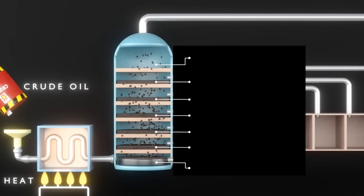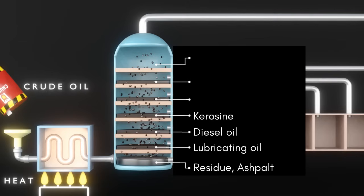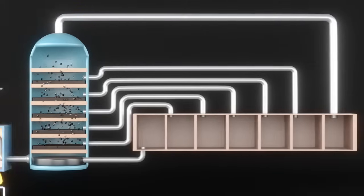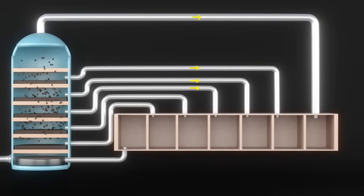By the refinery process, we get residue, lubricant oil, diesel, kerosene, petrol, naphtha, LPG, etc. Naphtha is our main product in plastic production. They are collected in different sections.